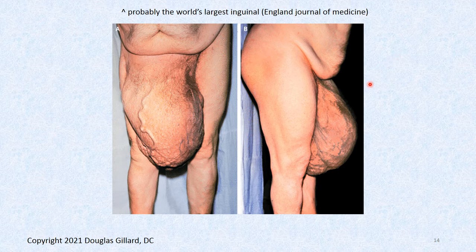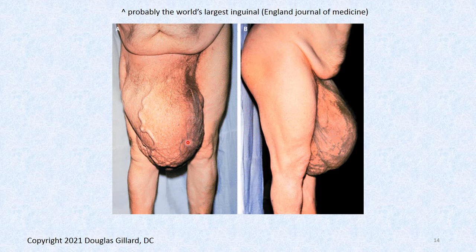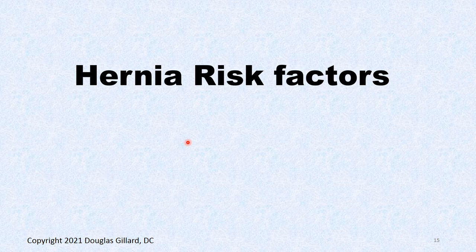The Guinness Book of World Records largest inguinal hernia was reported in the New England Journal of Medicine, so it's not photoshopped. Over the years, removal was recommended but the patient refused, didn't believe in surgery. It kept growing; a second and third time surgery was recommended but by the third visit it was too dangerous — all intestines had grown down into it. He had to live with it the rest of his life.